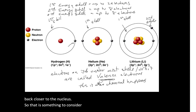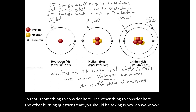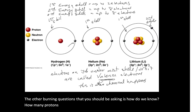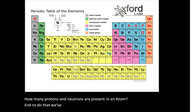So these electrons are constantly moving from orbit to orbit, from shell to shell, which is why we call it a cloud — they gain energy and move away, then lose energy and come back closer to the nucleus. The other burning question you should be asking is: how do we know how many protons and neutrons are present in an atom? To do that, we've got this thing called a periodic table.